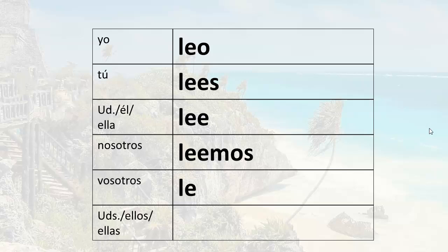Vosotros leéis. Then ustedes, ellos, or ellas — there's our root with the ending. Leen. So ellos leen can mean they read, they do read, they are reading. So there's our verb conjugated.